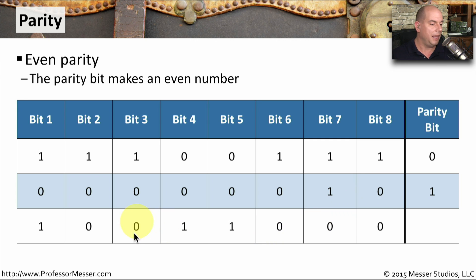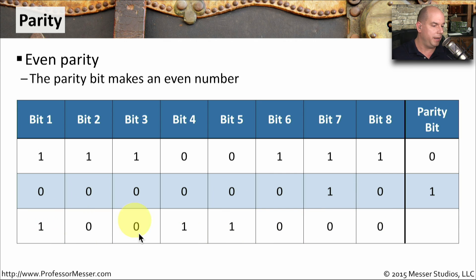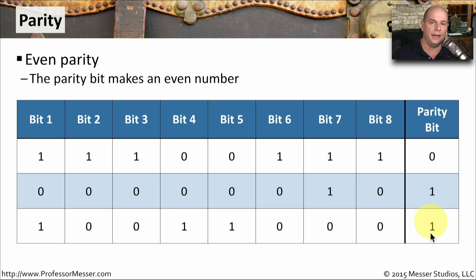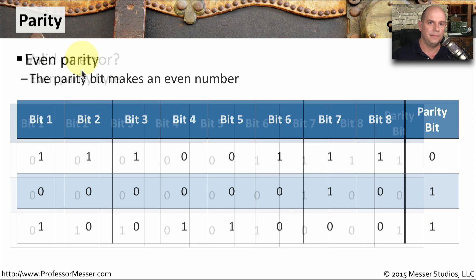For the last byte — 1, 0, 0, 1, 1, 0, 0, 0 — if we count the number of 1s, we have three. That is an odd number, so we need to add an additional 1 to make this an even parity.